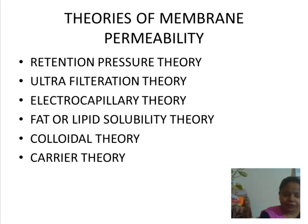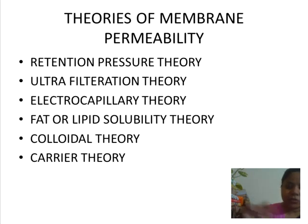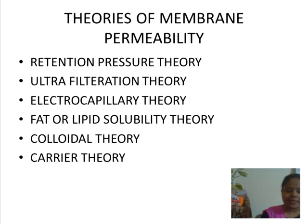According to the retention pressure theory, proposed by Traub, some substances which have close affinities with the cell membrane are allowed to pass through the membrane, while others are retained by it. That is, substances with close affinity for the cell membrane pass through, while those lacking affinity are retained.